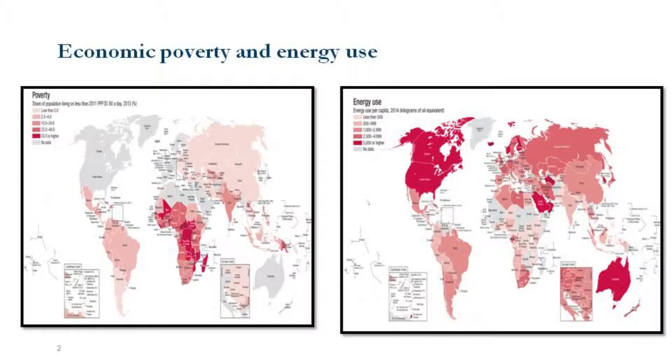On the left-hand side you see economic poverty, and on the right-hand side you see energy use. Where you have the big colors — the reds and pinks — in poverty, that's where you have the light colors in energy use. Looking at the maps, Africa has the highest levels of economic poverty and the lowest levels of energy use.